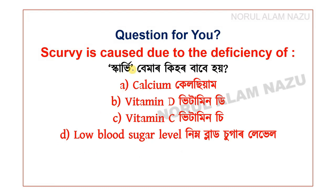Scurvy is caused due to the deficiency of which nutrient? Options include calcium, vitamin D, vitamin C, and low blood sugar level. Scurvy is caused by a deficiency of vitamin C.